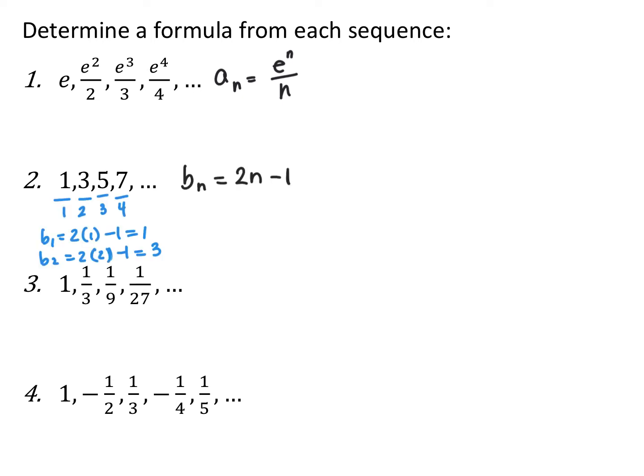So on this one, I noticed that the pattern was always 2 times n minus 1, so 2n minus 1. And then I checked just to make sure: for the first term, 2 times 1 minus 1 is 1; 2 times 2 minus 1 is 3, so on and so forth. Go ahead and pause the video and try numbers 3 and 4.